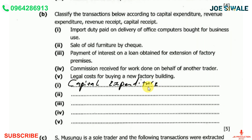Number two: sale of old furniture by cheque. That is going to be capital receipt.